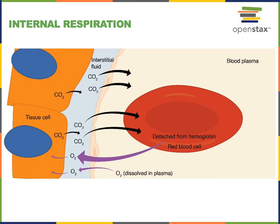Internal respiration refers to gas exchange between the blood within the systemic capillaries and the interstitial fluid of tissues throughout the body. As cells use oxygen for aerobic cellular respiration, the partial pressure of oxygen in the interstitial fluid decreases. As these cells produce ATP from aerobic cellular respiration, they also produce the metabolic waste product carbon dioxide, so the partial pressure of CO2 in the interstitial fluid increases — normally rising to around 46 mmHg.